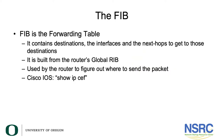The forwarding information base is the forwarding table. It contains the destination addresses, the interfaces, and the next-hop addresses to get to those destinations. It is built from the router's global routing information base. The forwarding information base is used by the router to figure out where a packet is sent to.